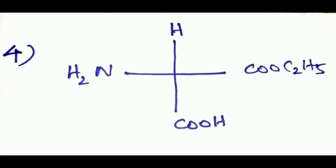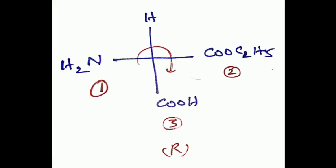Fourth example: carbon attached to amine group, acid group, ester group, and hydrogen. Nitrogen has atomic number 14, so it's first priority. Then second priority is ester group, third priority is carboxylic acid group, and fourth priority is hydrogen. With the lowest priority vertical, we determine the rotation. The rotation is clockwise, so it's R configuration.